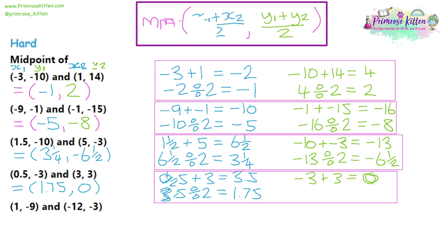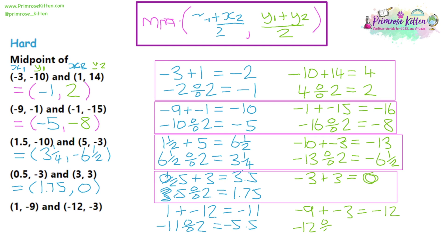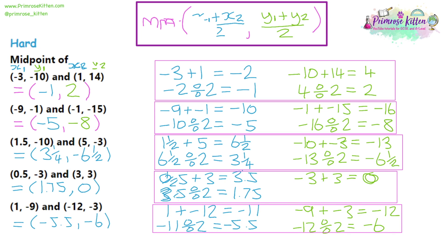For the final hard question, add the x-coordinates: 1 plus -12 gives -11. Dividing by 2: half of 10 is 5 and half of 1 is ½, giving -5½. For the y-coordinates: 9 plus -3 gives 6... dividing by 2 gives — wait, the calculation shown gives -12 / 2 = -6. So the final answer is (-5.5, -6). With the hard questions we can see that you can find midpoints even without a graph by using the formula, though you will have to remember that formula yourself.